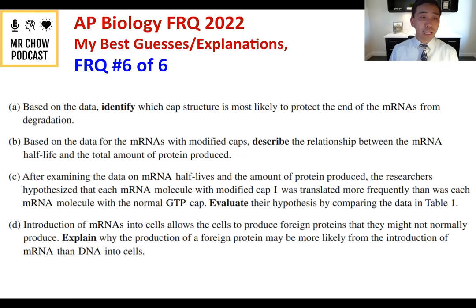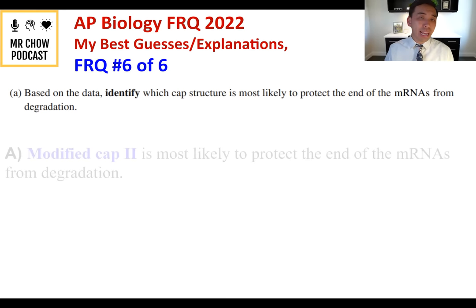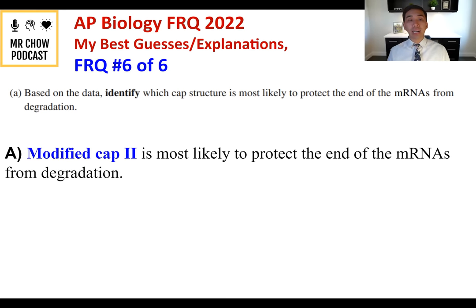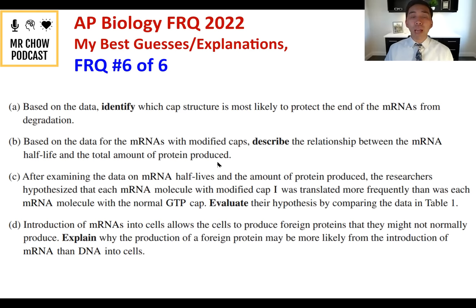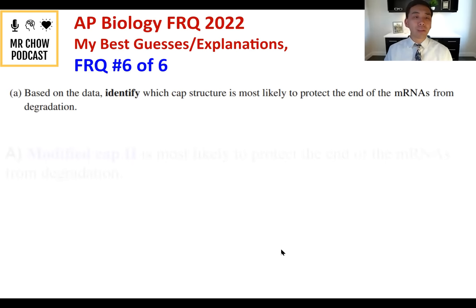Question 6A: Identify which cap structure is most likely to protect the end of mRNAs from degradation. Based on the data, modified cap two is most likely to protect mRNAs because it produced the most total protein, indicating the mRNA was most stable and lasted long enough to be translated.